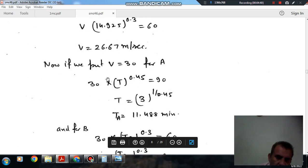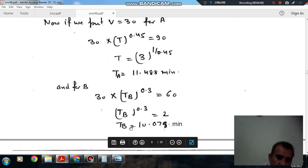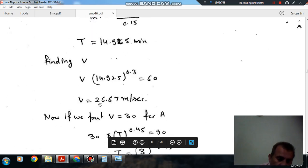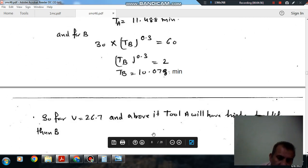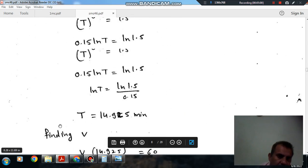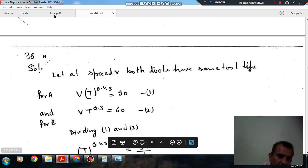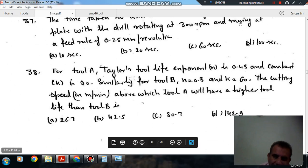So it means the tool life for V is equal to 30 is for tool A is more than B. So at speed 26.67 or more, the tool life of A will be higher than the tool life of B. So answer is 26.67, option A.